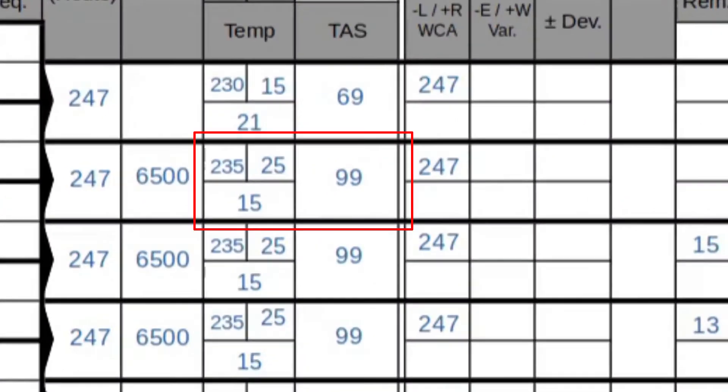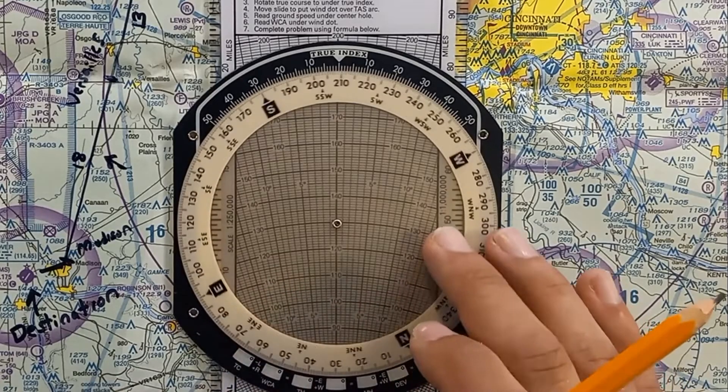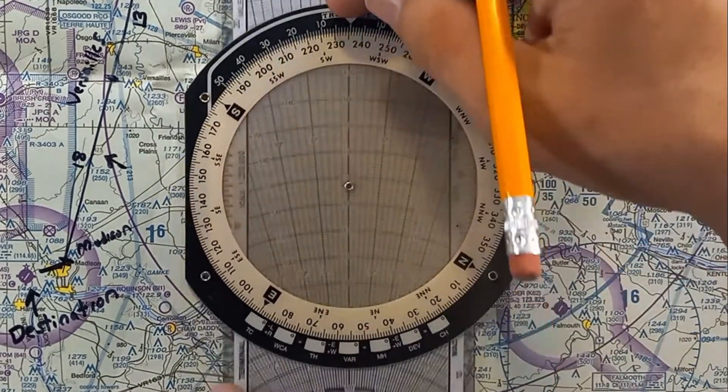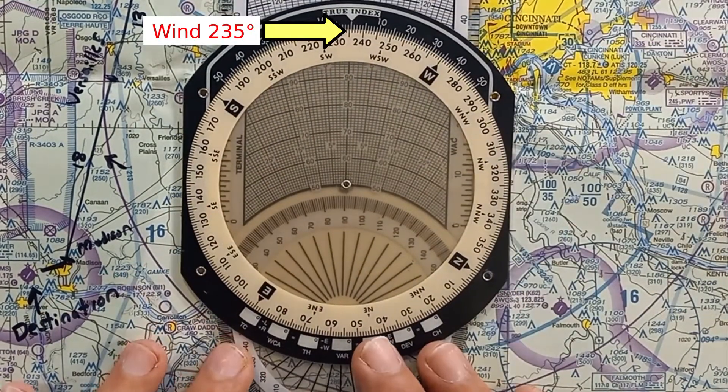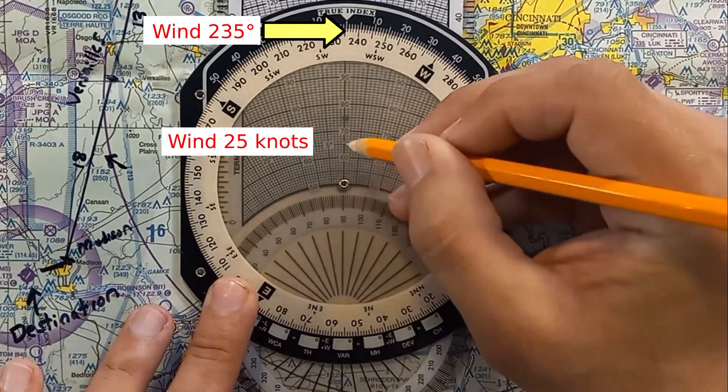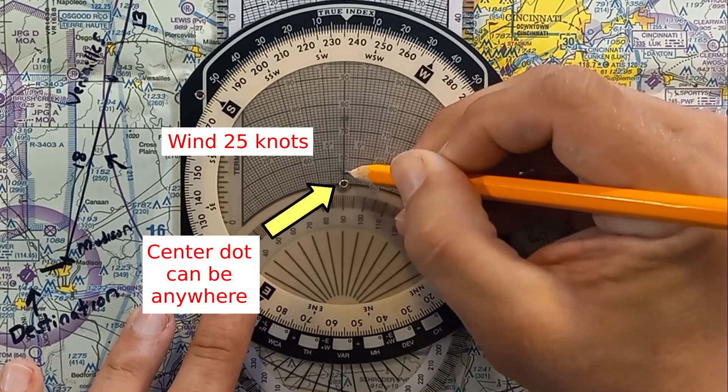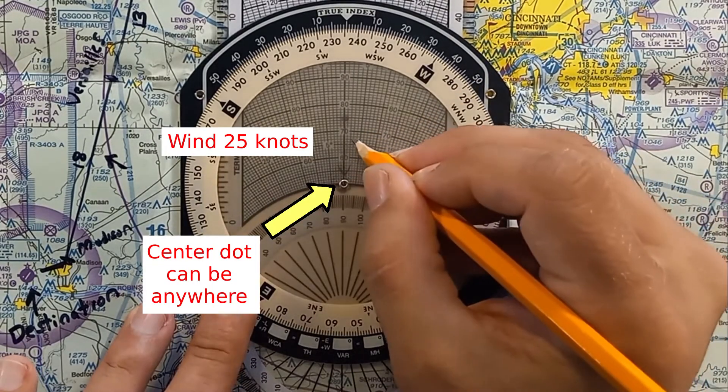Once we have our true airspeed, we'll need to compute the effect of wind for each leg of our flight plan. Rotate the wind direction under the true index on your E6B flight computer. Mark the wind velocity along the center line. It doesn't matter where the center dot is when you do this because the vertical tick marks are uniformly spaced.